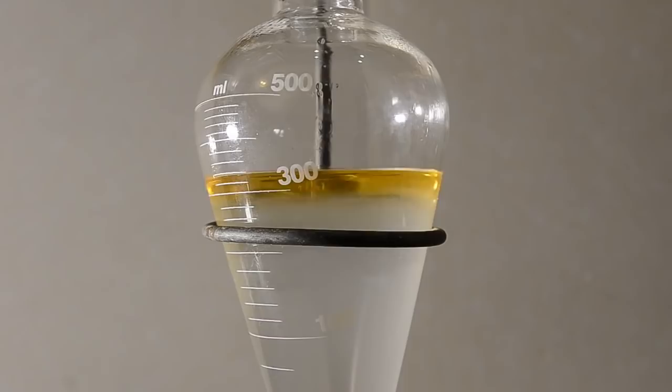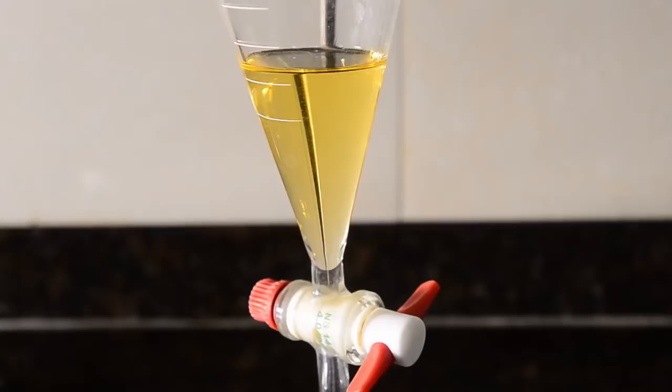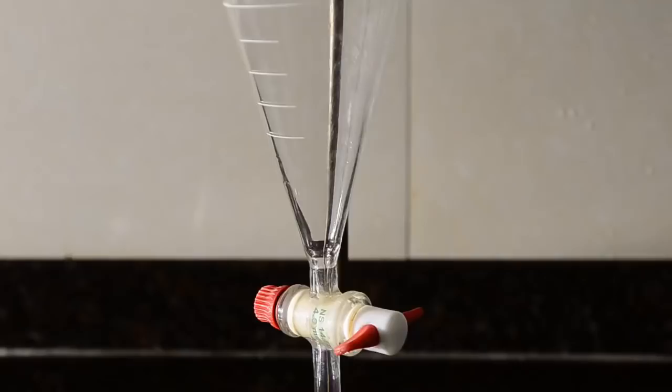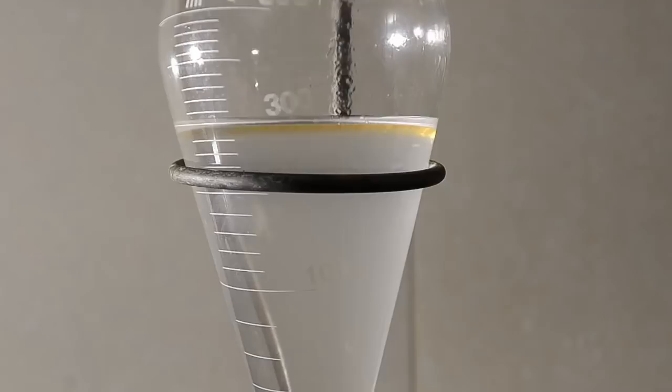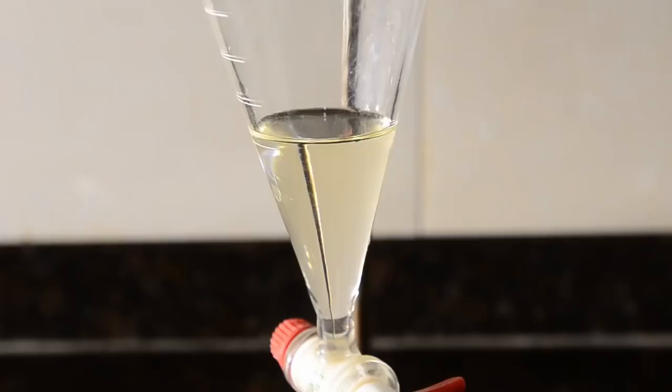Pour this into a separating funnel and separate the bottom aqueous layer. Reserve this. Then collect the benzene layer in a small flask. Return the aqueous layer to the funnel and extract it using 10 ml of benzene. Then separate the aqueous layer and combine the benzene layer with the previous one.